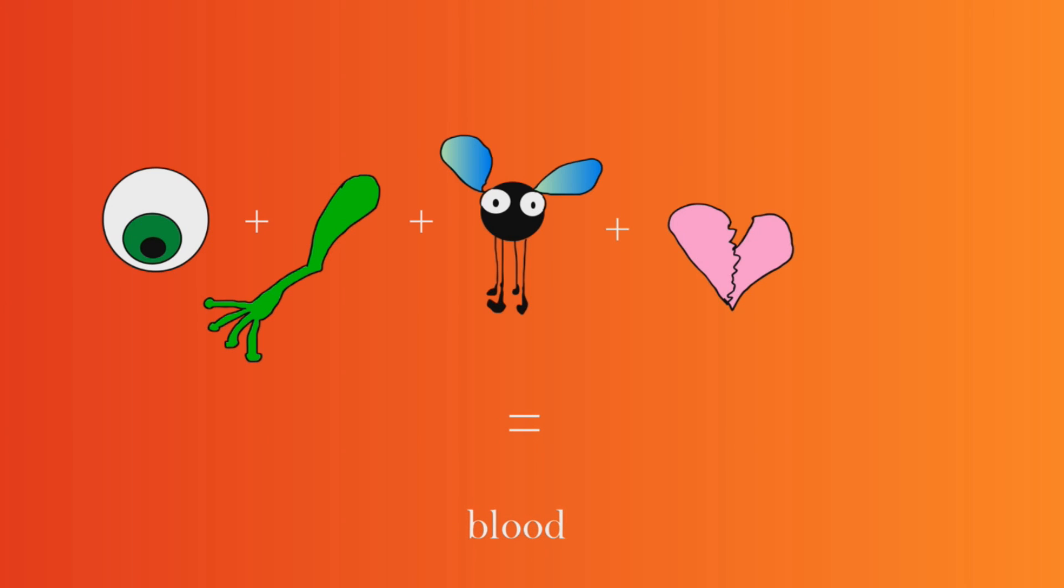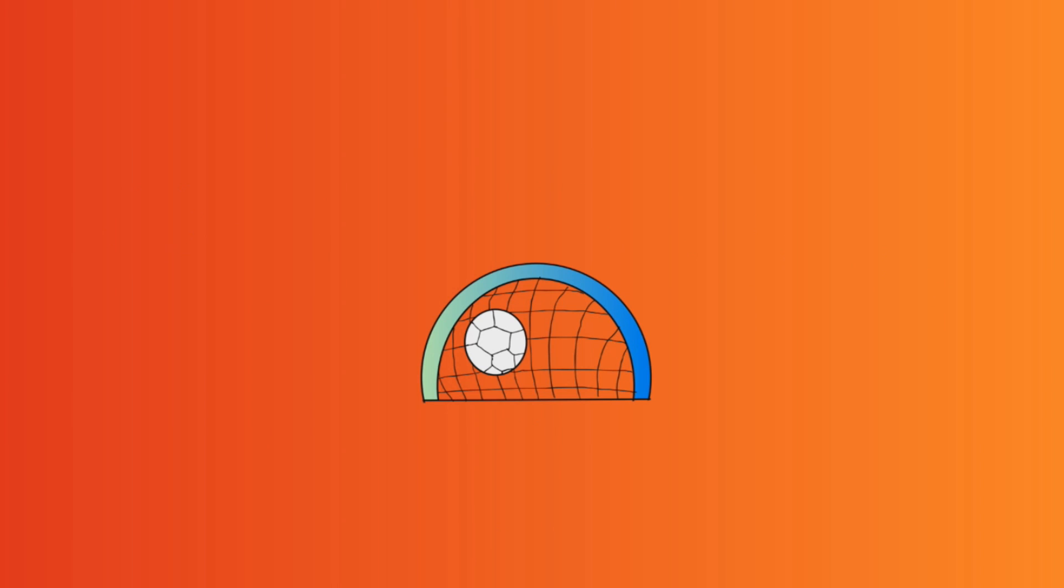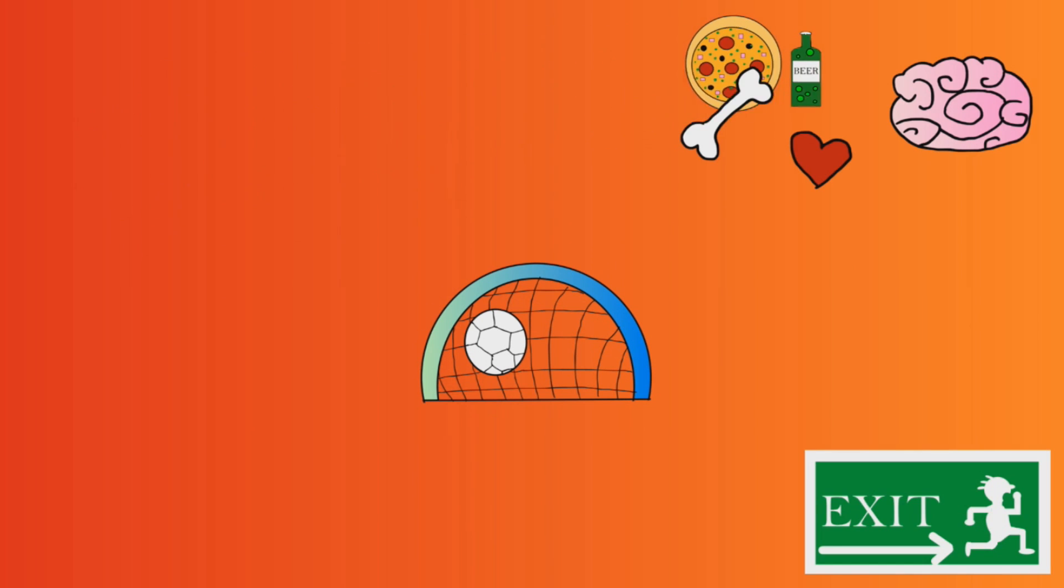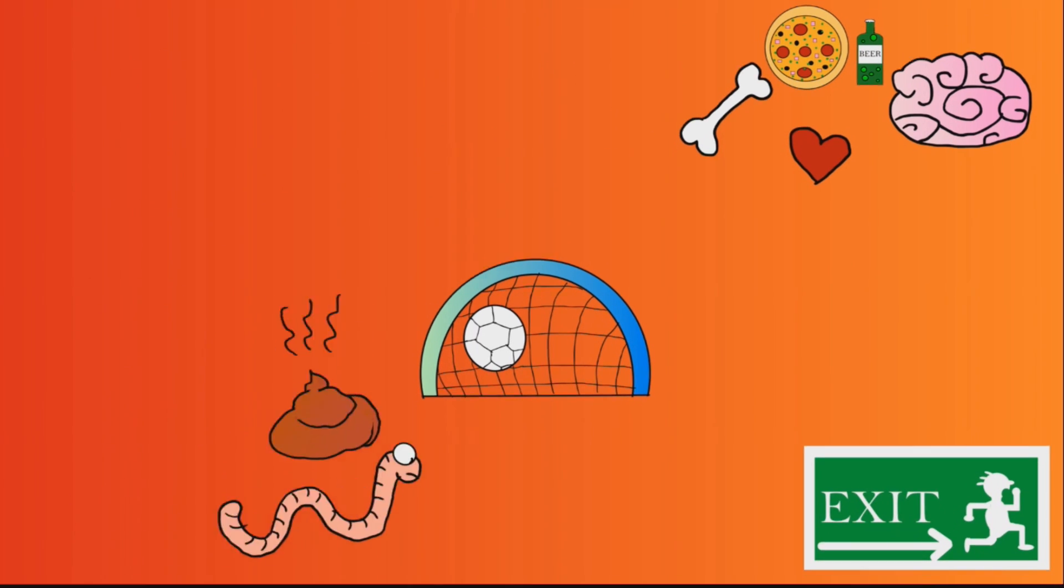Blood's composition is actually quite intricate, but the general goal is to get all the stuff that you need to live where it needs to go and all the stuff that you don't want in your body out.